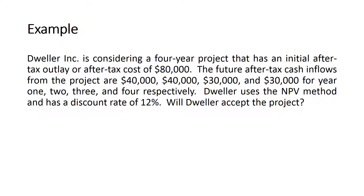Dweller Incorporation is considering a four-year project with an initial after-tax outlay of $80,000. The future after-tax cash inflows are $40,000, $40,000, $30,000, and $30,000 for years one, two, three, and four respectively. Dweller uses the net present value method and has a discount rate of 12%. Will Dweller accept the project?